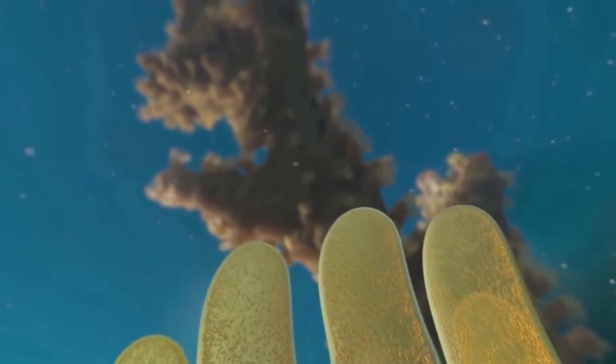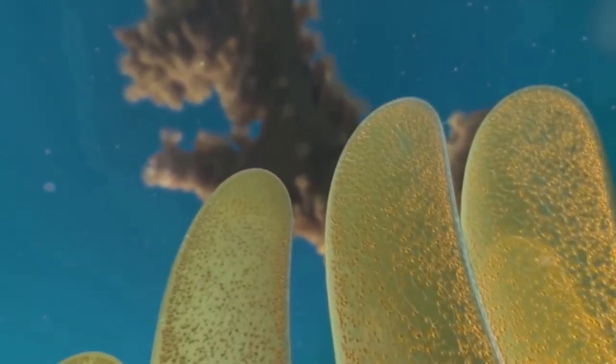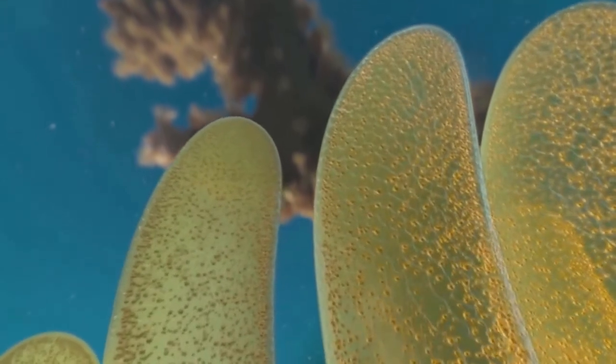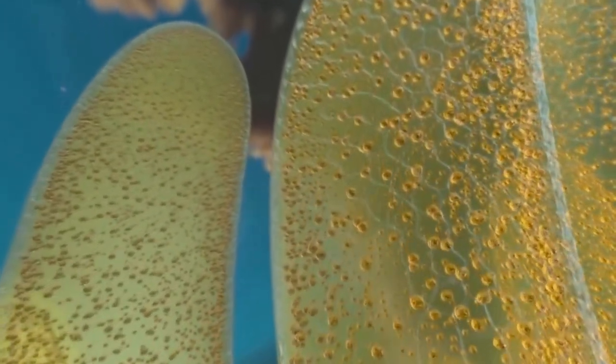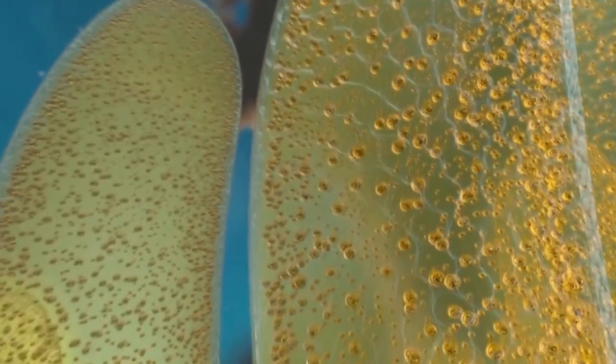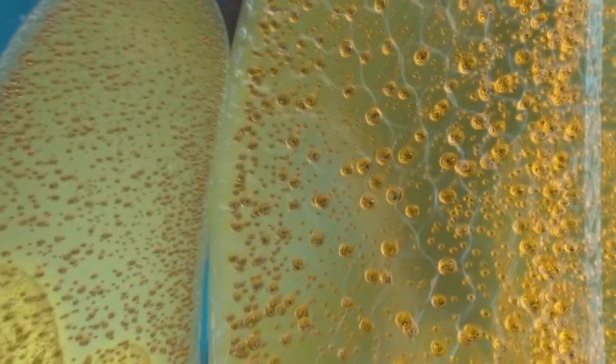The inner layers of the polyp's tissue provide a home to algae called zooxanthellae. These algae give the coral its color, and more importantly, they harness light from the sun through a process known as photosynthesis.